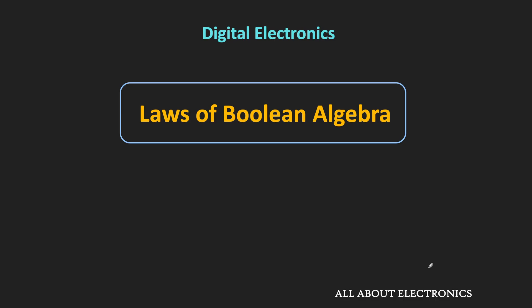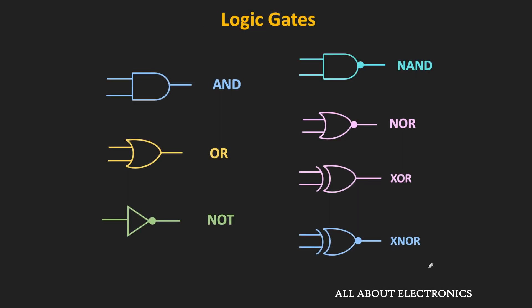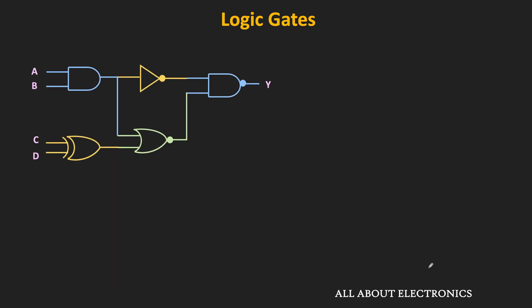Hey friends, welcome to the YouTube channel all about electronics. In the previous video we learned about logic gates and we have also seen that when we combine these different logic gates, they can perform various logic operations. These logic operations performed by circuits can be represented using Boolean expressions, and if we have some Boolean expression it can also be implemented using logic gates.